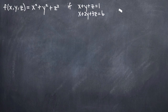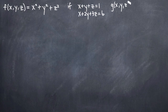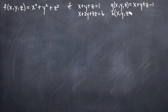The first thing we always want to do with any Lagrange multiplier problem is make sure that our constraint functions are in terms of g of x, y, z and h of x, y, z. We'll make our two constraint functions g and h by subtracting the constants to move everything to the left-hand side. So g of x, y, z equals x plus y plus z minus 1, and h of x, y, z equals x plus 2y plus 3z minus 6.